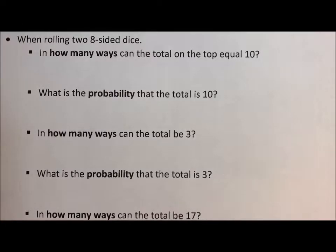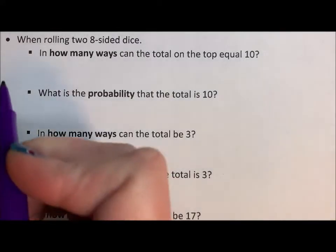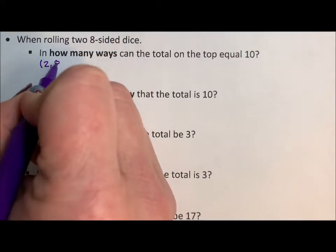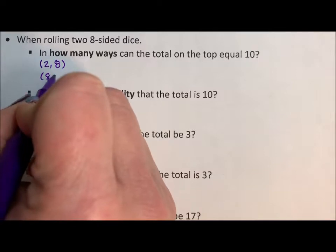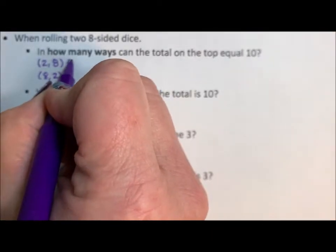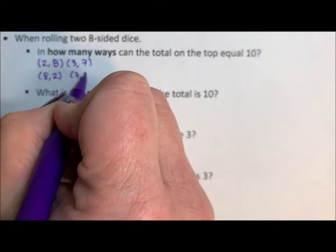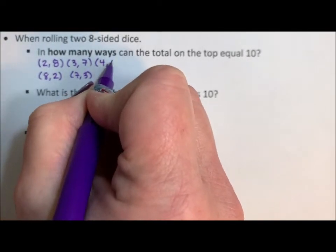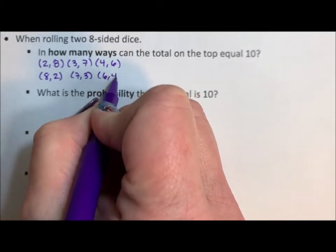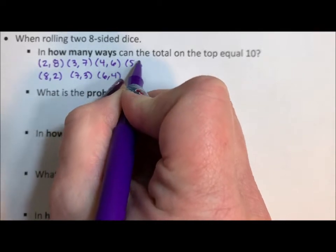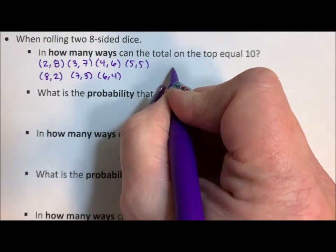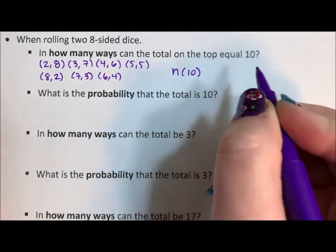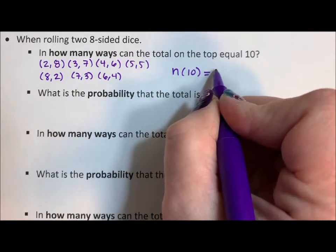When rolling two 8-sided dice, in how many ways can the total on the top equal 10? Well, we can start with 2 and 8, or 8 and 2, 3 and 7, 7 and 3, 4 and 6, 6 and 4, 5 and 5. So there are 7 ways to get a sum of 10.